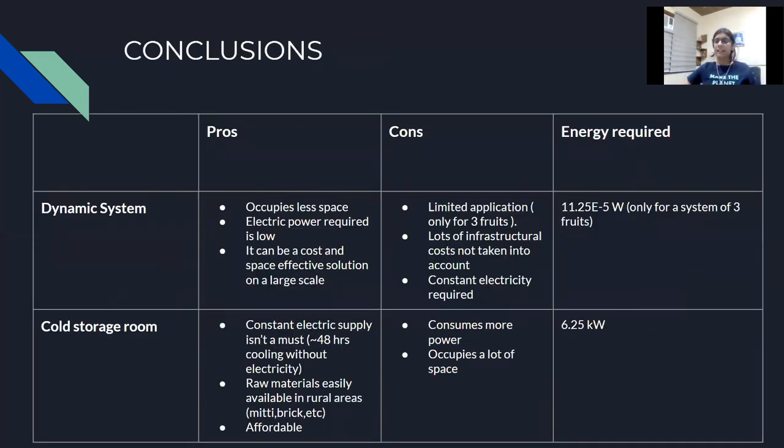Now, as we can see that this energy is quite low. Why is it so? Because we had only considered 3 fruits here. The system could have been vast with a larger number of components.